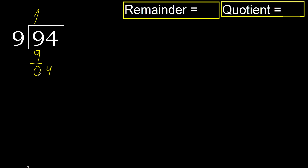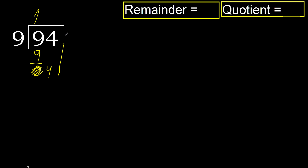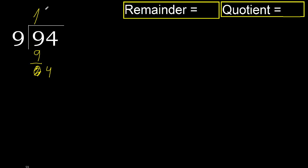Next, bring down. Eliminate the 0 on this side. 4 is less than 9, therefore move to next. There is no number, so finish it — complete with 0, because we finish it with this number.